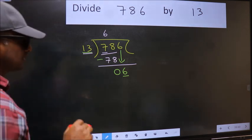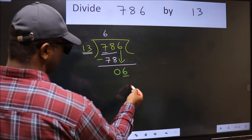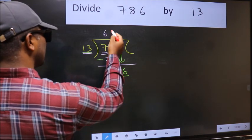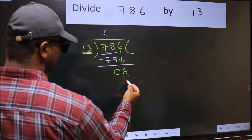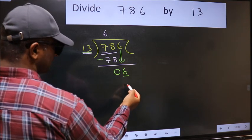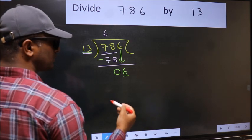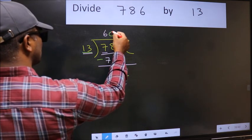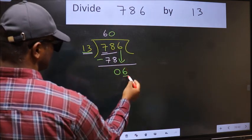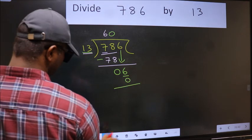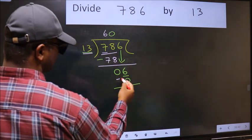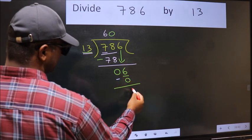Instead, what you should think of doing is which number should we take here. If I take 1, we will get 13. But 13 is larger than 6. So what we should do is we should take 0. So 13 into 0 is 0. Now we should subtract. 6 minus 0 is 6.